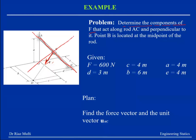B is located at the midpoint of the rod, so B is in the center. Once they say B is in the center, you can easily figure out the position. The very first thing is that we have F and we have to convert this into Cartesian vector form. We know the position, so we can get r_BD because we know all the details and B is the midpoint.